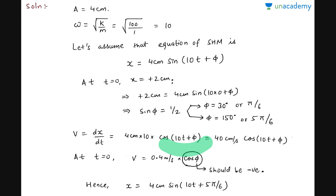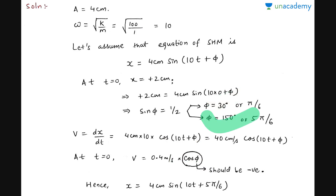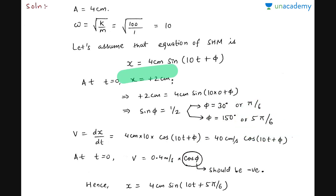At t = 0, velocity should be negative, which means cos φ should be negative. Is cos 30° negative, or cos 150°? The answer is cos 150° is negative. So φ will be 5π/6.